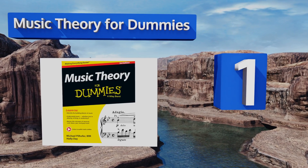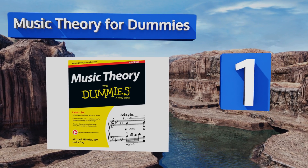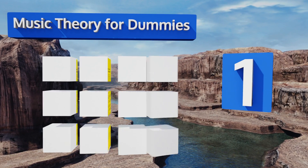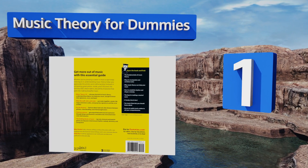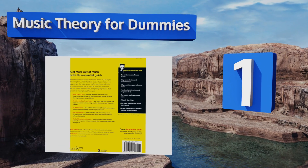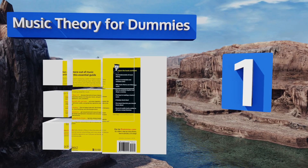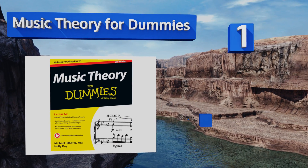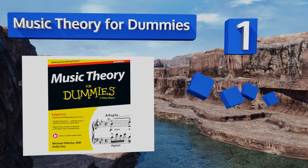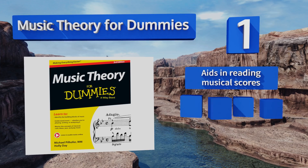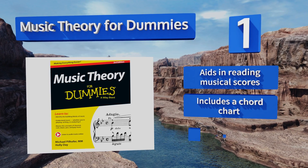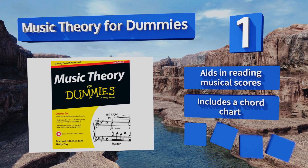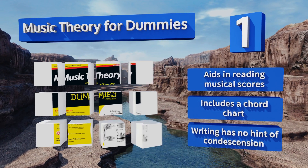Taking the top spot on our list, Music Theory for Dummies is a serious resource for beginner and intermediate students, though the name might not suggest it. There's plenty of challenging information to work through and it's presented in a concise, well-paced manner. It aids in reading musical scores and includes a chord chart. The writing has no hint of condescension.